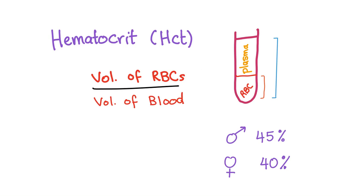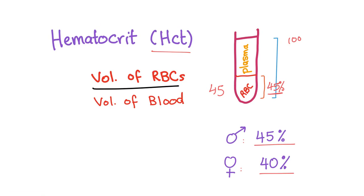Hematocrit value is the ratio of the volume of RBCs over the volume of blood. Blood has two main components: red blood cells and plasma. The ratio of red blood cells to whole blood is the hematocrit — normally around 45% in males and around 40% in females. Remember: it's volume of RBCs over volume of blood, not plasma.